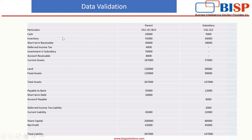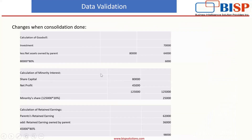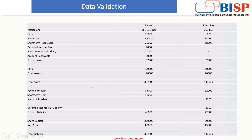You can see cash in current assets, inventory, short-term receivable, deferred income tax 4,000, investment in subsidiary, and account receivable. There is a fixed asset of 1,20,000, so the total asset is 3,70,000. Then we have liabilities: payable to bank 35,000, short-term debt 10,000, so current liability is 45,000, share capital 2,00,000, net profit 62,000, total liabilities 3,07,000. In the subsidiary, current assets combining cash and inventory equals 57,000, land is 90,000, so total asset is 1,47,000.